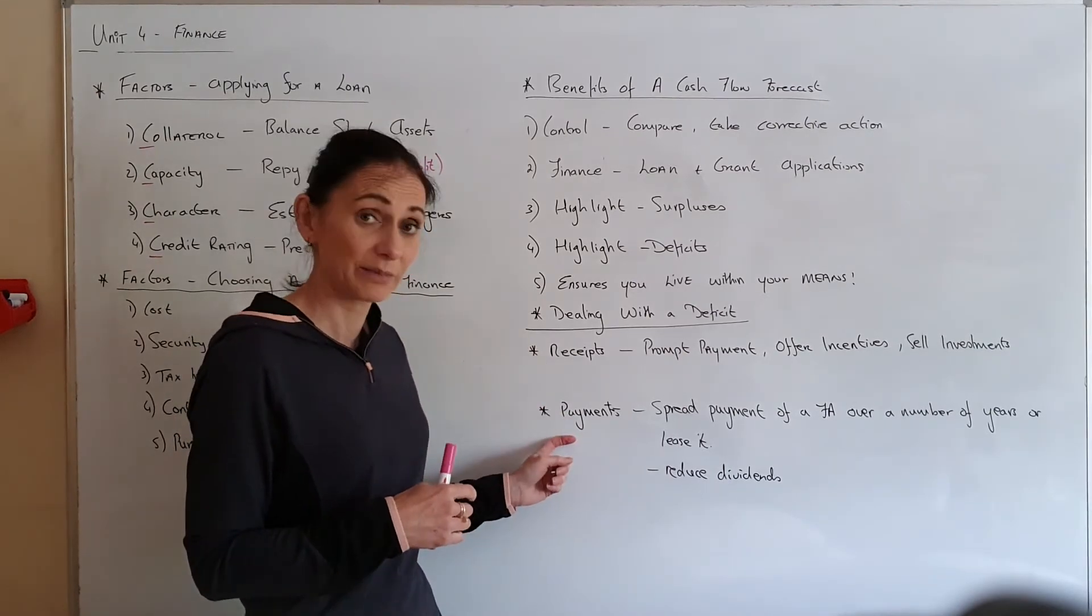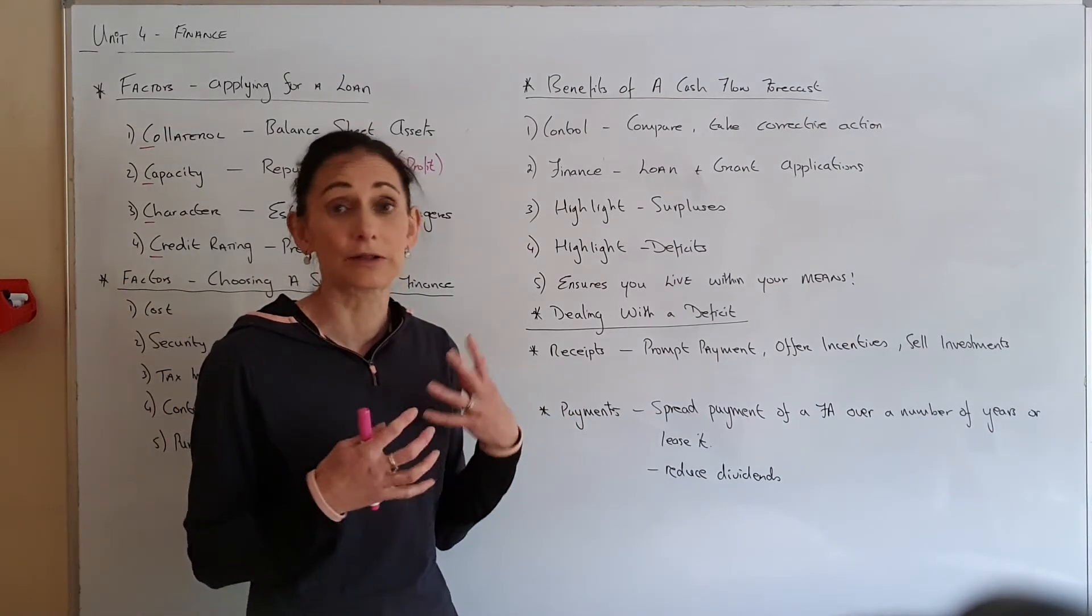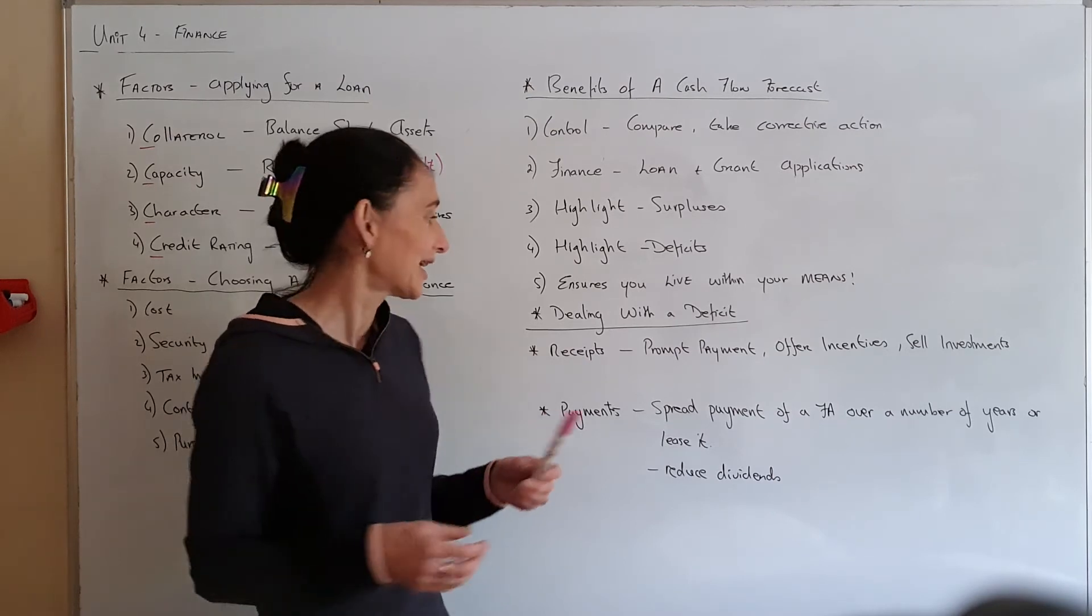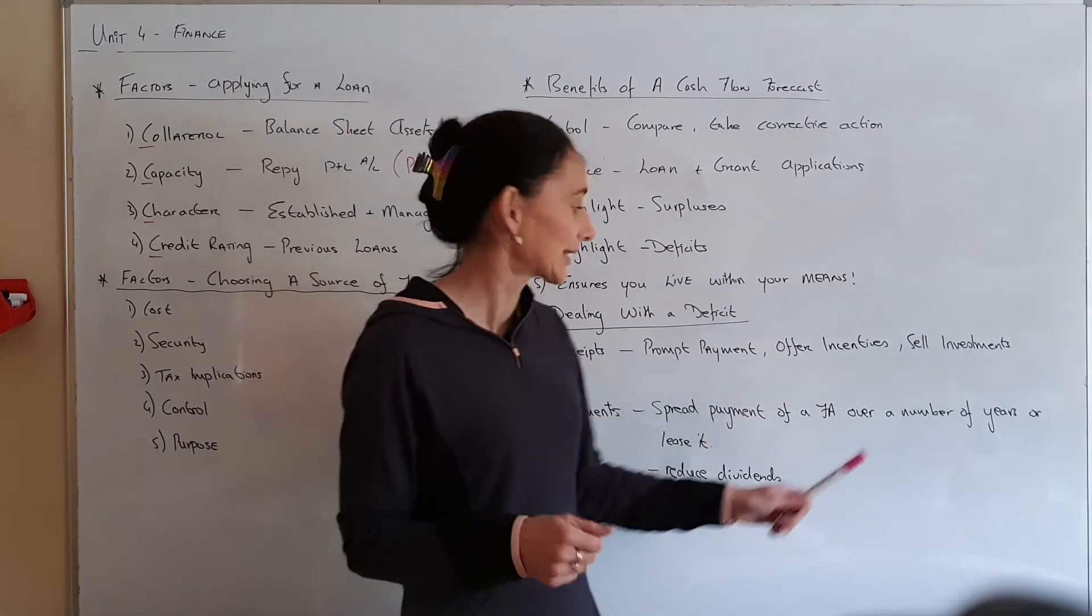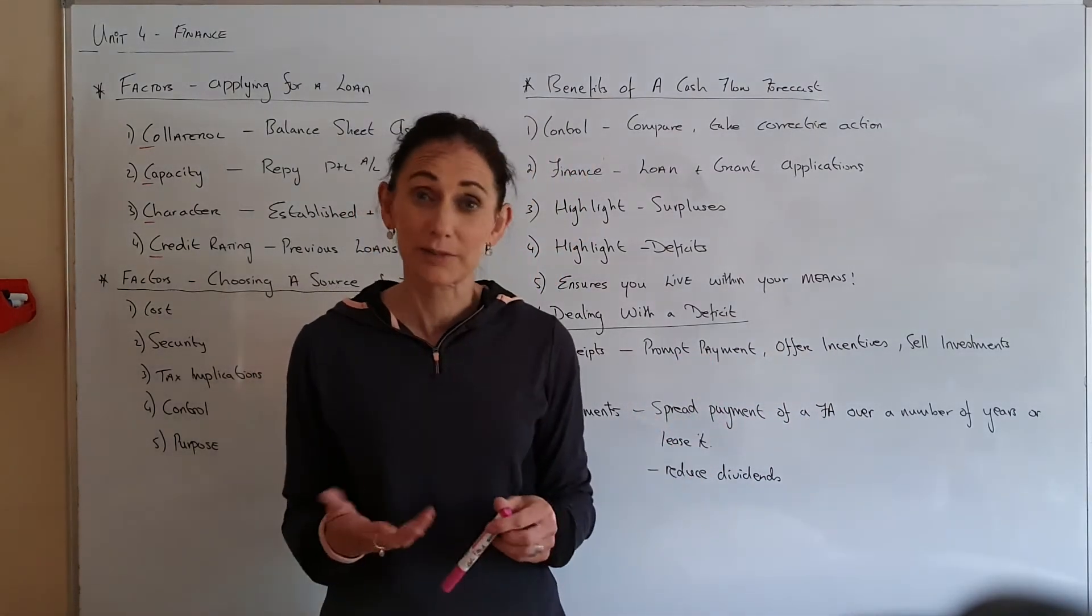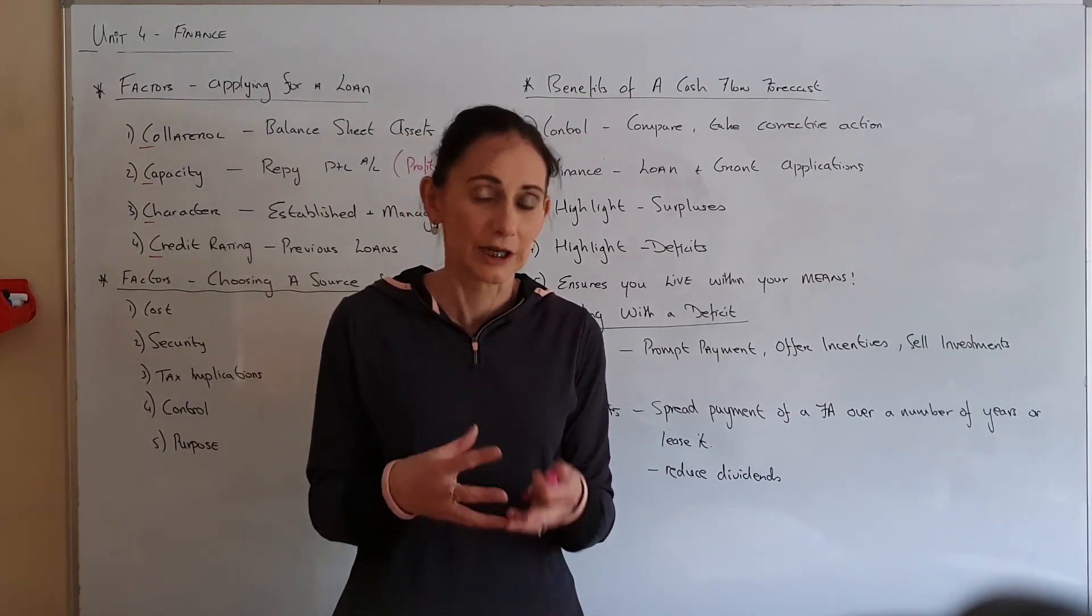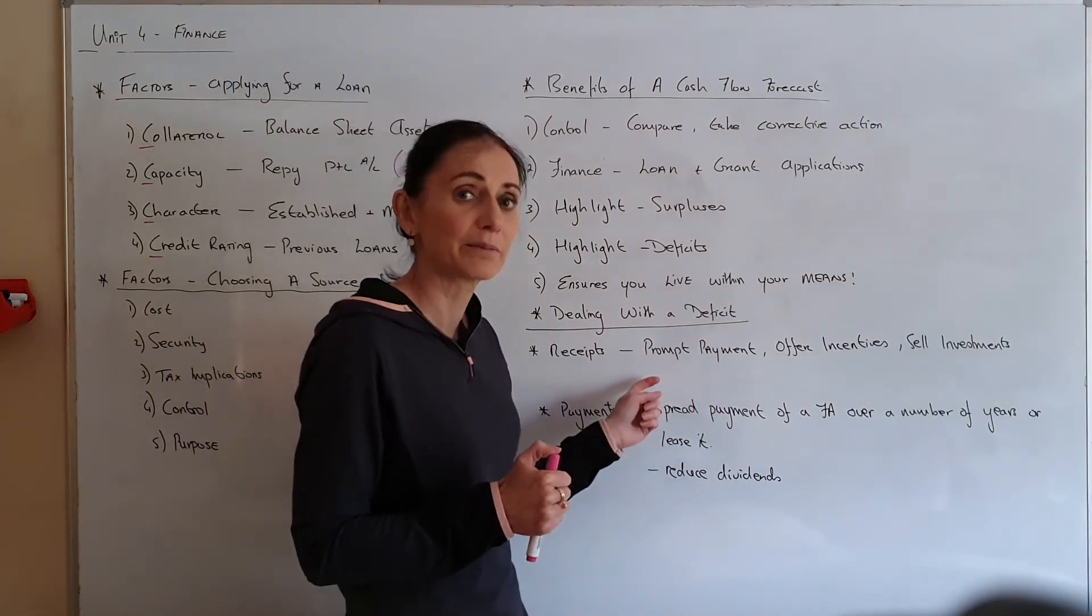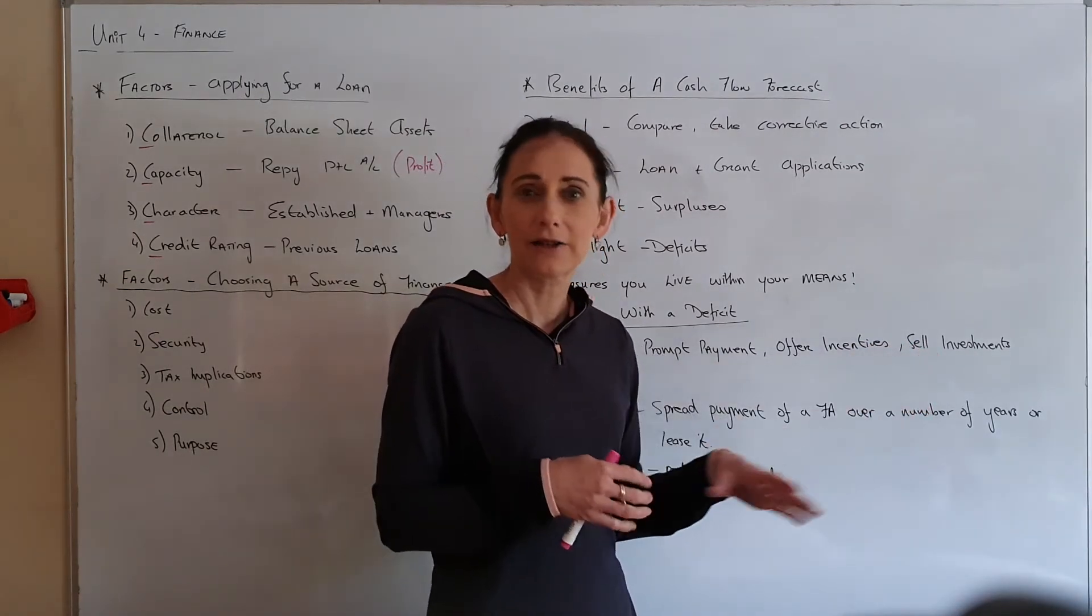In your receipts, if you have a deficit, you want to improve your receipts. Most businesses get their money from sales, so you might offer incentives to increase your sales. Look for prompt payment if you're selling a lot on credit—because you have no choice but to sell on credit to keep your market share—you need to get that money in quick, so maybe give them something for prompt payment.